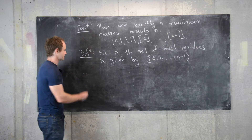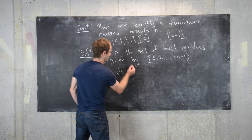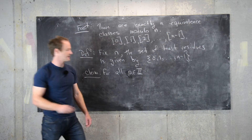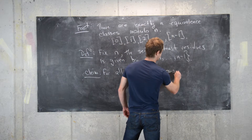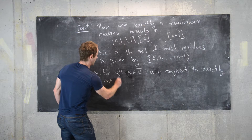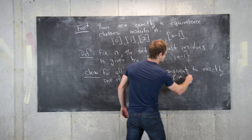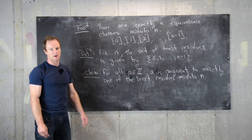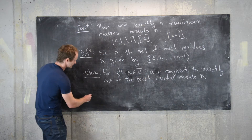Every element in the set of least residues is attached to one of the equivalence classes. So here is a claim: for all integers a, a is congruent to exactly one of the least residues modulo n. In essence, this means that if you're talking about arithmetic modulo n, you only really need to talk about the numbers 0 through n minus 1. Let's go ahead and prove this.